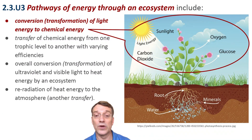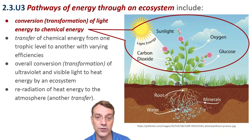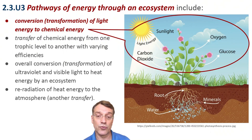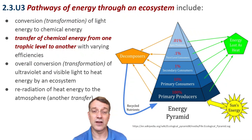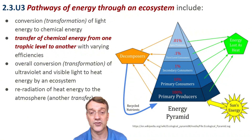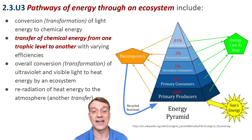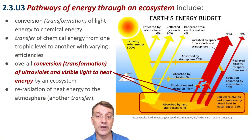Energy follows specific pathways through ecosystems. First, light energy is transformed into chemical energy through photosynthesis. This chemical energy transfers between trophic levels with varying efficiencies, and eventually all that energy is transformed into heat and re-radiated to the atmosphere and ultimately out into space. Notice how only about 10% of the energy moves from one trophic level to the next — the rest is lost as heat. This energy pyramid shows primary producers capturing 100% of available energy, with subsequent levels retaining progressively less.